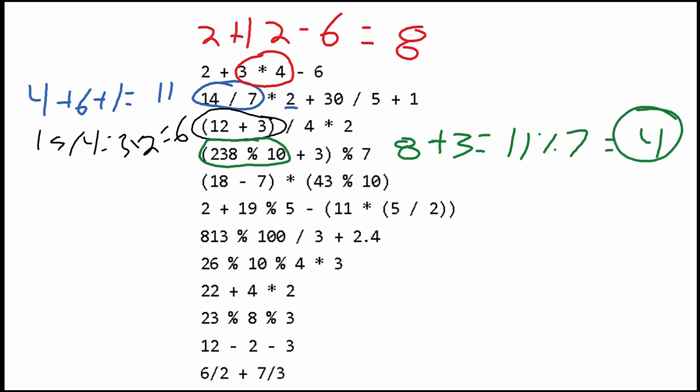For the next one, we have 18 minus 7 in parentheses, so that's going to give us 11. Then we need to multiply this by 43 modulus 10, which is 3, and that gives us the answer 33.